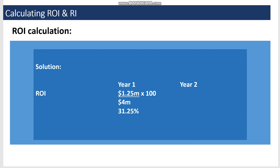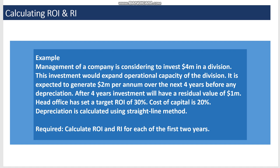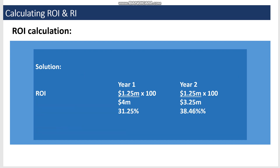For ROI in year one: 1.25 million divided by 4 million times 100 gives 31.25%. In year two, the same calculation using updated figures gives a higher ROI. The head office target was 30%, so both years performed well — year one exceeded the benchmark and year two improved further.